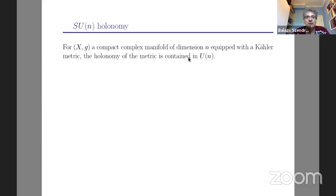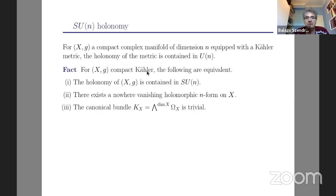I'll start with the holonomy point of view. One disclaimer: I'm an algebraic geometer, so this talk will be very much in algebraic geometry, but I'll emphasize all the connections to language perhaps more familiar to the audience. So X will always denote a compact, complex, connected manifold of some dimension. It will certainly be a Kähler manifold. For a Kähler manifold, the holonomy is of course contained in U(N), and there's a standard theorem that the following conditions are equivalent: the holonomy is contained in SU(N), there exists a non-vanishing holomorphic top form, and the canonical bundle is trivial.